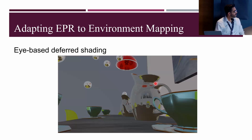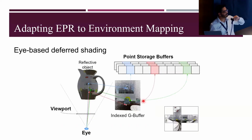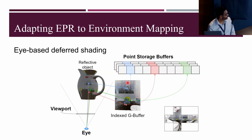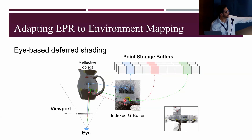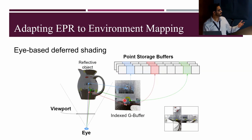Consider the breakfast scene — focus on this jug reflector. We shade off-screen pixels only if they are reflected onto eye pixels. Here's the reflection map for the jug: we reflect the rays, find which point they reference, get the data, shade it, and store it. The white and color pixels that never get reflected are skipped entirely, saving a lot of shading computation.